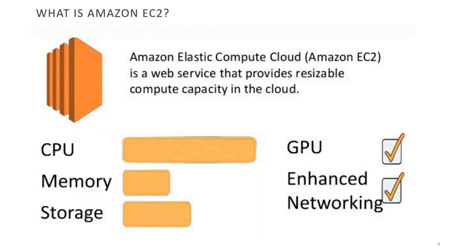What is Amazon EC2? EC2, or Elastic Compute Cloud, is a web service that provides resizable compute capacity in the cloud. You can use EC2 to launch virtual machines — instances — with a variety of operating systems and to scale your compute resources up or down as needed.